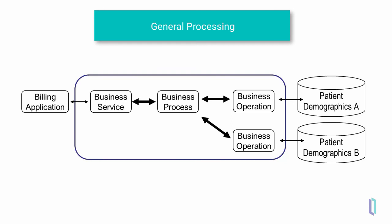In this example, the business service is able to return a response to the application that sent the original request. However, not all business services are able to send responses, and not all applications are able to receive responses from a business service. This example illustrates a business process being used for flow control, logic and processing, business operations querying a database, and a business service returning a response to the application that sent it a request.